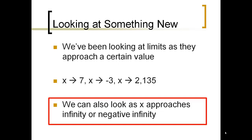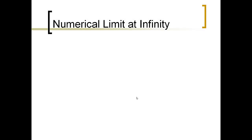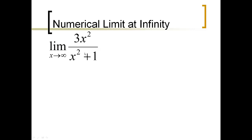The key here is that instead of the x value approaching some finite number — like x approaches 7, or x approaches 2135 — we're looking at what's happening at the extreme left or right horizontally on the function. Talking about limits at infinity, let's look at an example: the limit of 3x squared over x squared plus 4, as x approaches infinity. You'll notice x is not approaching some finite number; it's approaching infinity.